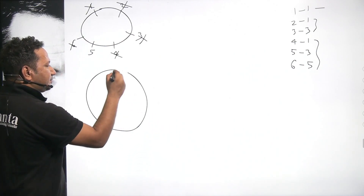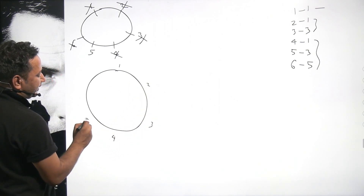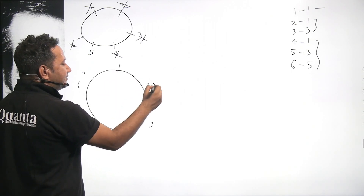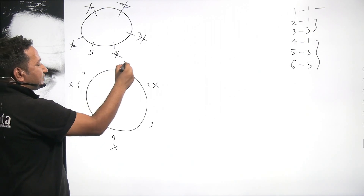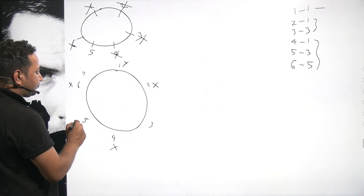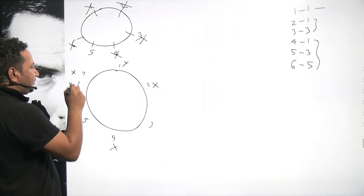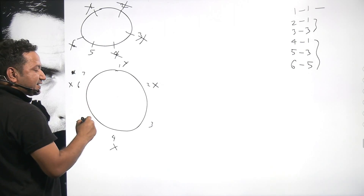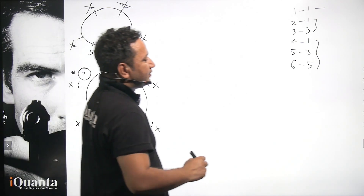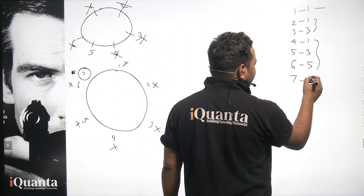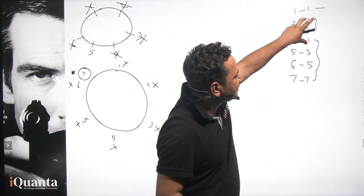For seven people: one kills two; three kills four; five kills six; seven kills one; gun comes to three; three kills five; gun goes to seven; seven kills three — seventh one survives. So for N=7, R=7. The pattern so far is 1, 1, 3, 1, 3, 5, 7 — essentially the odd numbers forming a sequence.